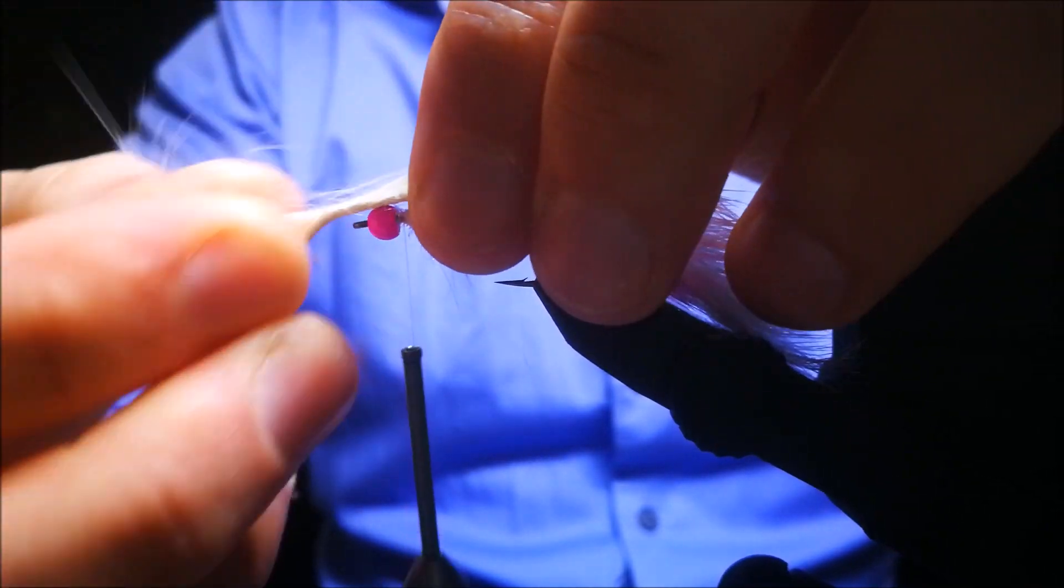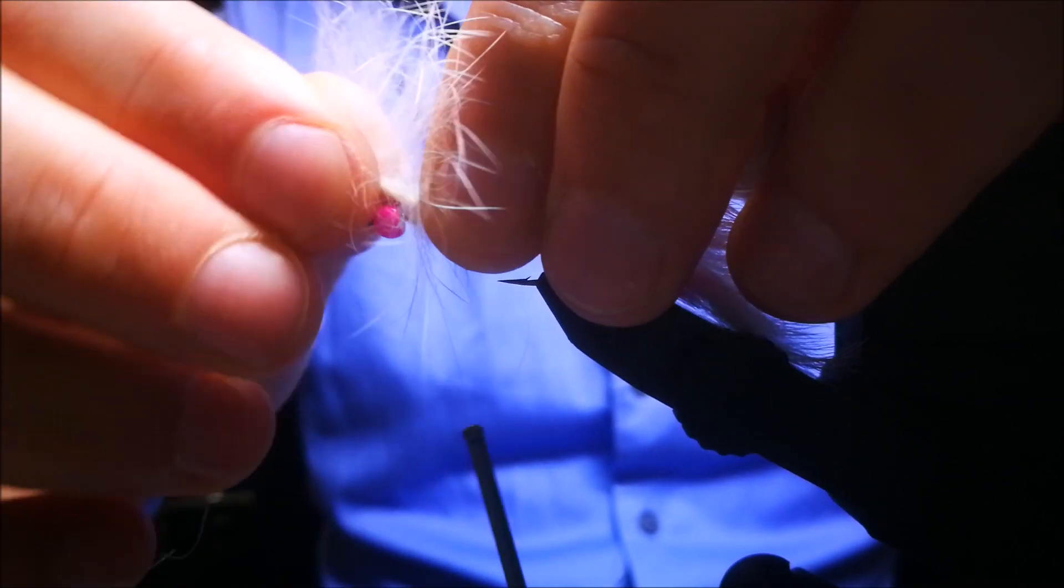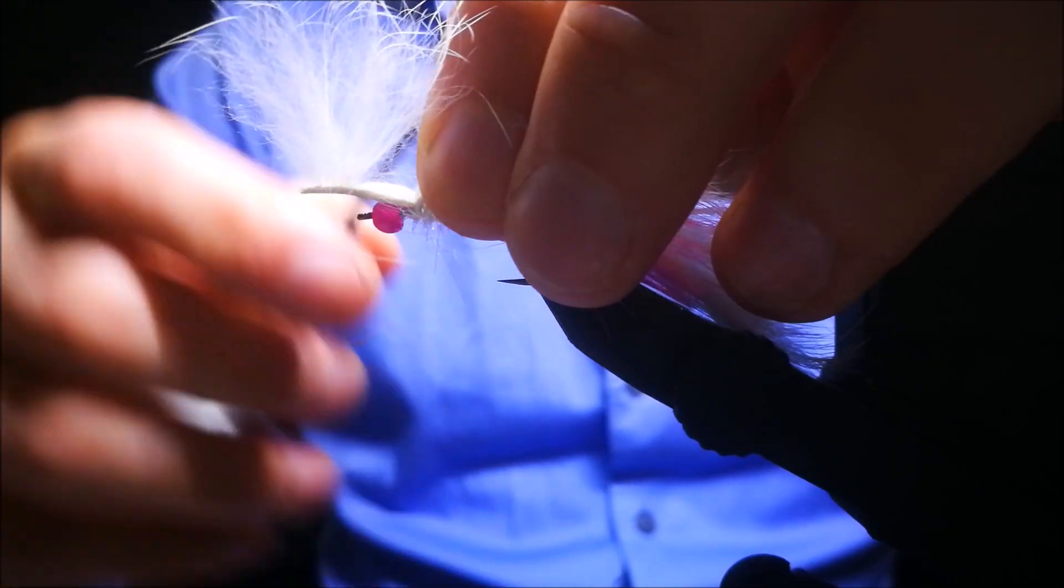pull the sunker strip tightly and secure it with the tying thread. And when it's tied down, you just trim the excess.